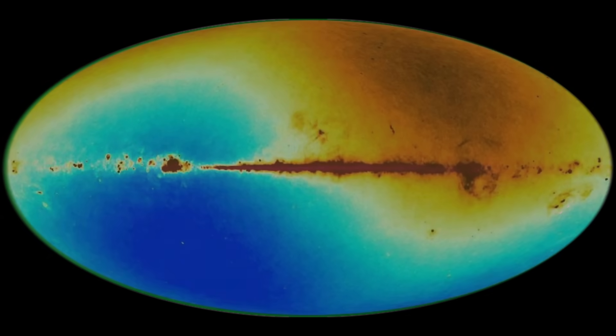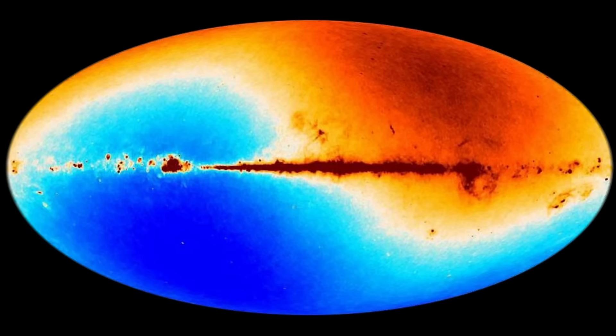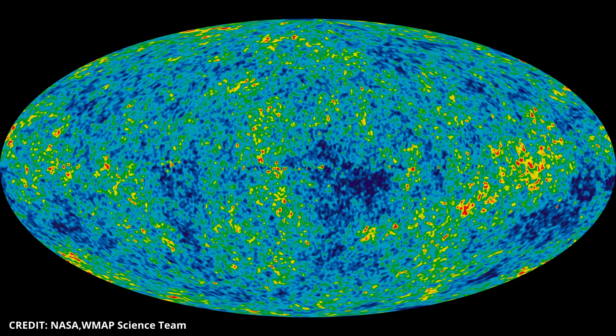What leaps out immediately in the raw data is a large scale gradient. One side of the sky is slightly hotter, the other slightly cooler. Only a few mK of difference, but vastly stronger than the micro fluctuations.